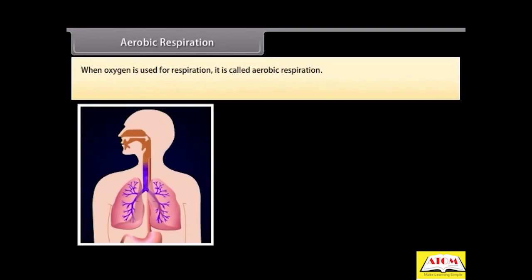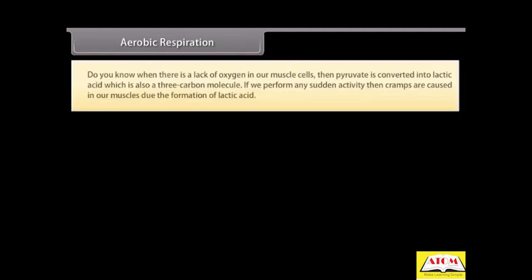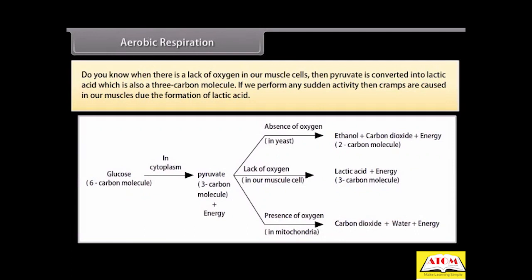Aerobic respiration. When oxygen is used for respiration, it is called aerobic respiration. Examples: most plants and animals. Do you know when there is a lack of oxygen in our muscle cells, pyruvate is converted into lactic acid, which is also a 3-carbon molecule? If we perform any sudden activity, cramps are caused in our muscles due to the formation of lactic acid.